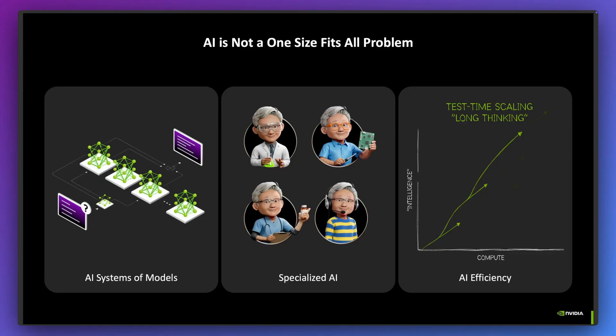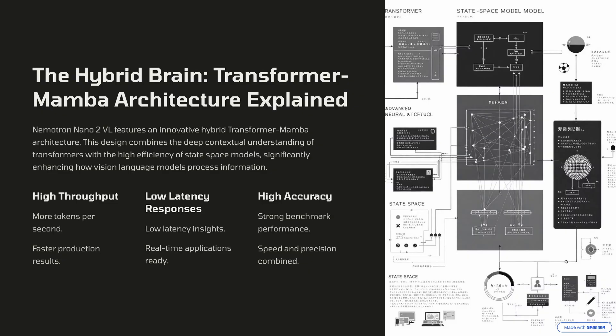What makes the model special are a number of different things in terms of the architecture. One of the techniques they use is called efficient video sampling, which reduces tokens by 4x. Under the hood, it uses something called hybrid transformer Mamba architecture.